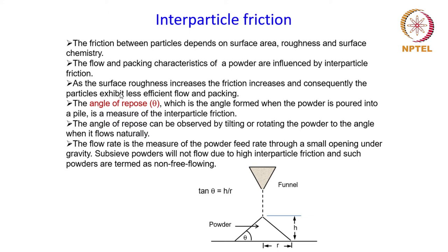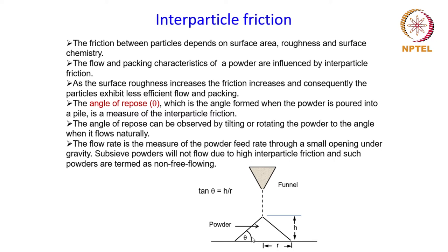The way interparticle friction is measured is through a parameter called the angle of repose, which is the angle formed in a heap of powder. You might have seen a heap of sand or cooking flour in the kitchen — it forms a pyramid kind of shape. The angle that it forms is an indication of the interparticle friction. If we can measure this angle, we can get an idea about the interparticle friction of a powder.